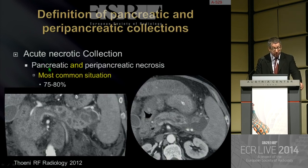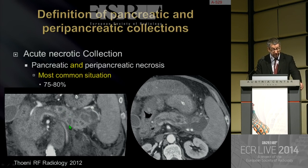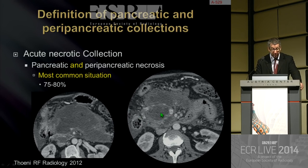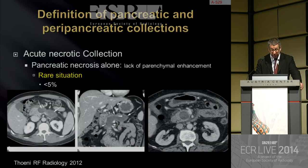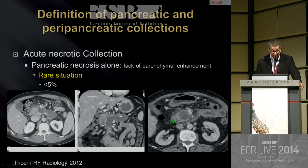Acute necrotic collection can involve both pancreatic and peripancreatic necrosis — the most common situation, accounting for around 75 to 80% of cases. Another example shows both intrapancreatic and extrapancreatic low-density formations corresponding to acute necrotic collections. A second situation, very rare, is when pancreatic necrosis is only in the pancreatic parenchyma alone with a lack of parenchymal enhancement — only intrapancreatic necrosis without peripancreatic necrosis. Here is a personal example in the pancreatic head, clearly a lack of enhancement related to pancreatic necrosis and not a tumor.